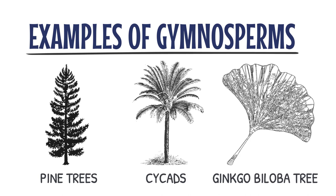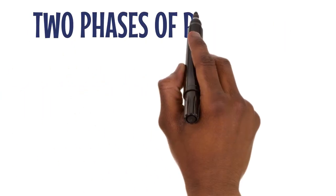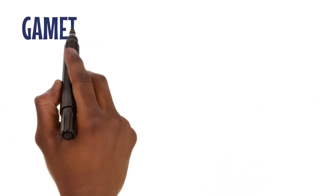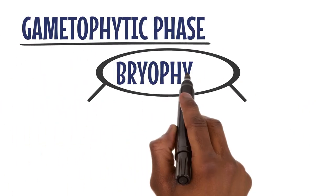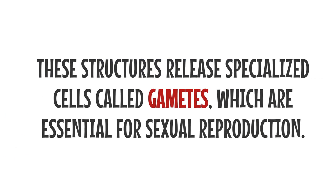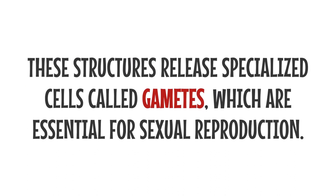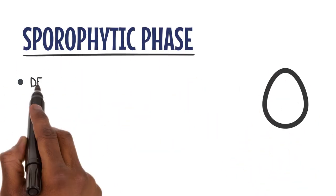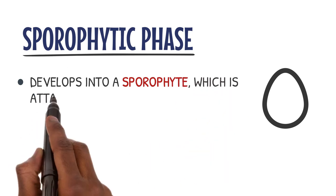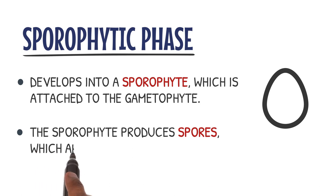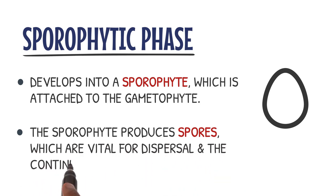Now, let's compare the two phases of Bryophytes: the Gametophytic and Sporophytic phases. In the Gametophytic phase, Bryophytes produce male and female reproductive structures called Gametangia. These structures release specialized cells called Gametes, which are essential for sexual reproduction. In the Sporophytic phase, the fertilized egg develops into a sporophyte, which is attached to the Gametophyte. The sporophyte produces spores, which are vital for dispersal and the continuation of the life cycle.